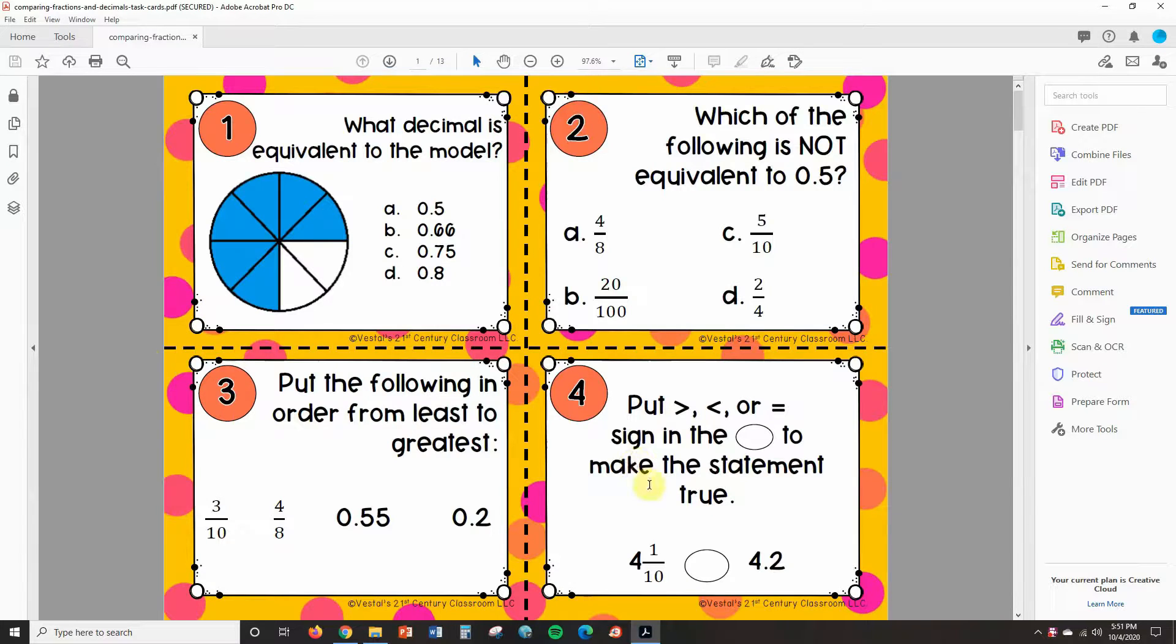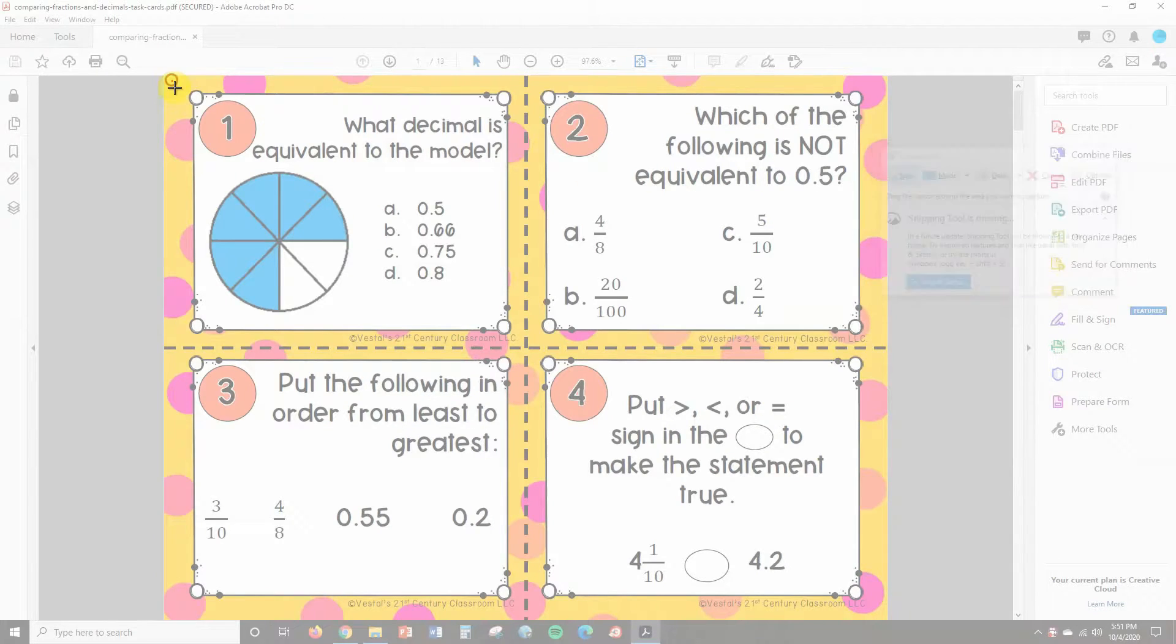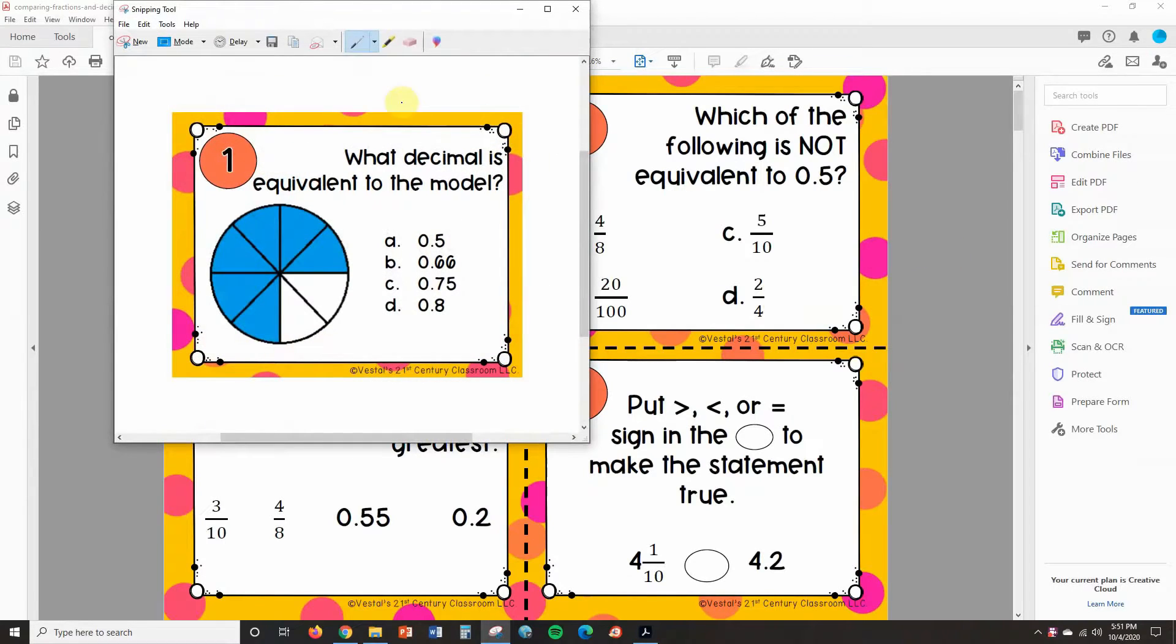And what I usually use is the snipping tool. So you can search for this on your PC and it's usually automatically on your computer. So to use the snipping tool I just click new and then I am going to highlight the first task card.